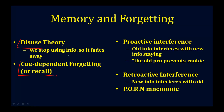Then there's the interference theory, and there are two kinds of interference. There is proactive interference, and that's where old information interferes with new information. I like to think of it as the old pro preventing the rookie from being able to play. The old information does not allow you to learn the new information — for example, calling a new girlfriend or boyfriend by a previous girlfriend or boyfriend's name. That's proactive interference.